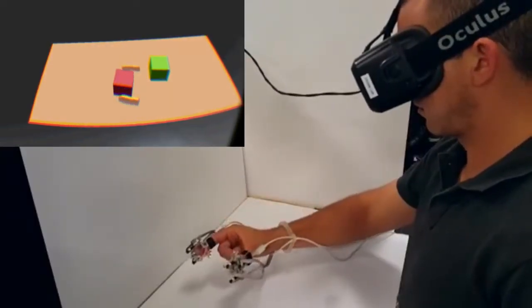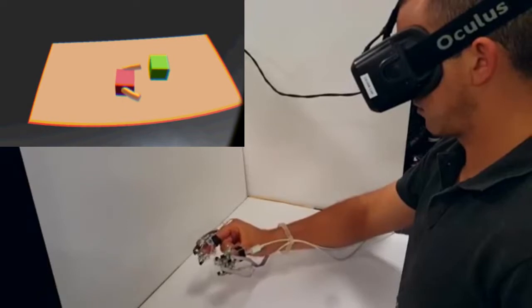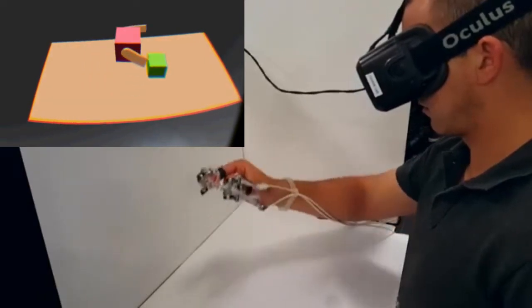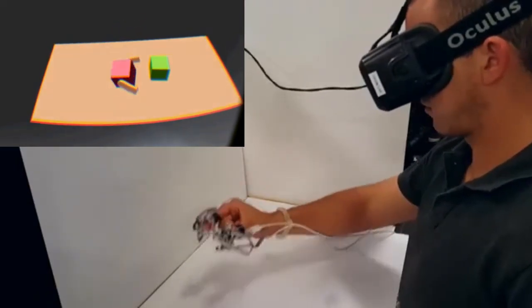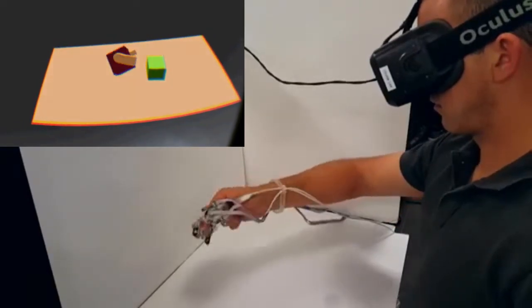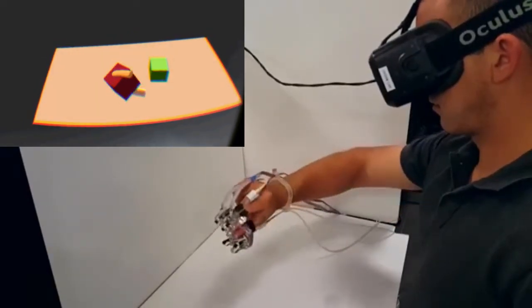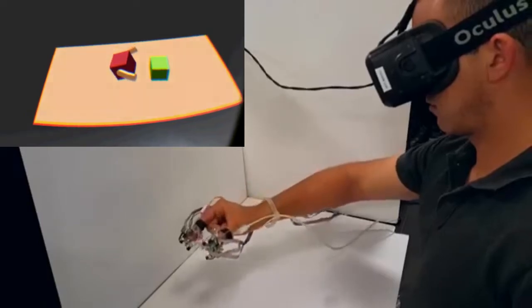When coupled with a head-mounted virtual reality display, HapDips can be used to feel and interact with objects in the virtual environment. HapDips can render both force direction and magnitude information that is not possible with simple vibration tactile devices.